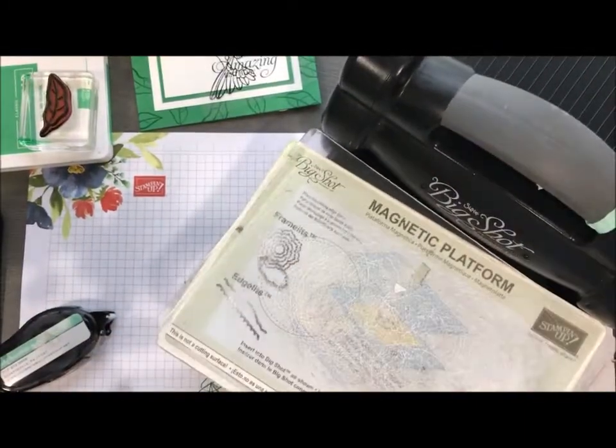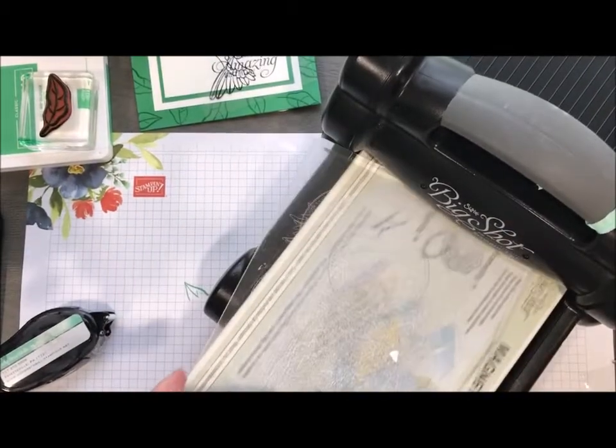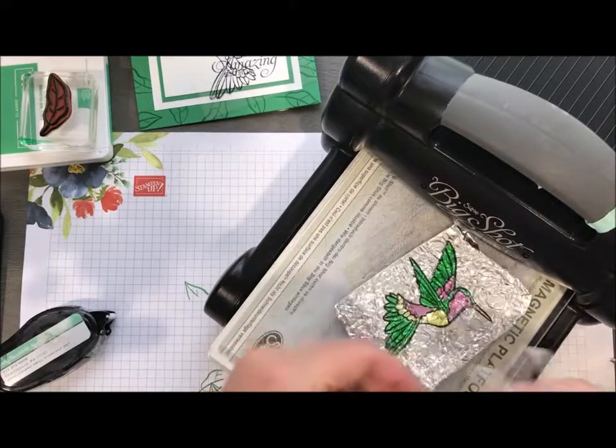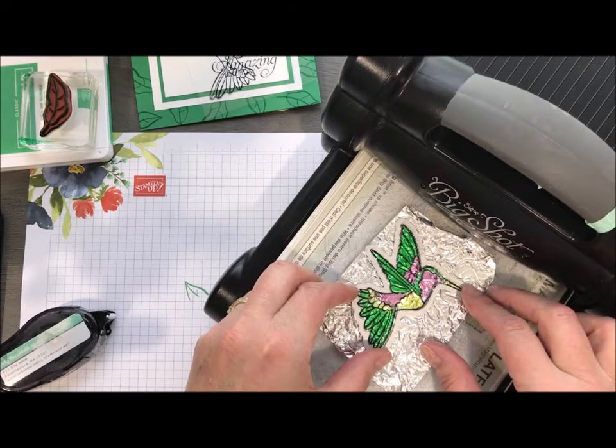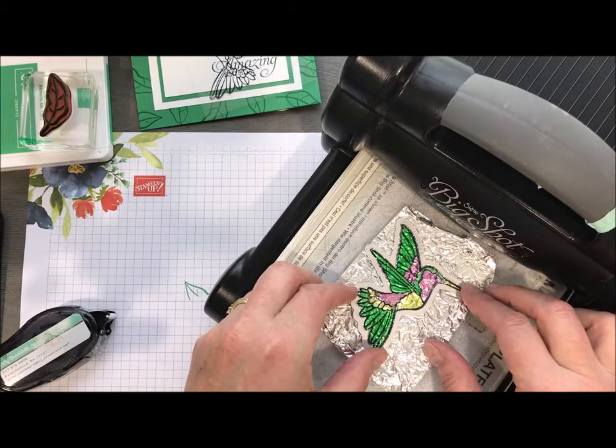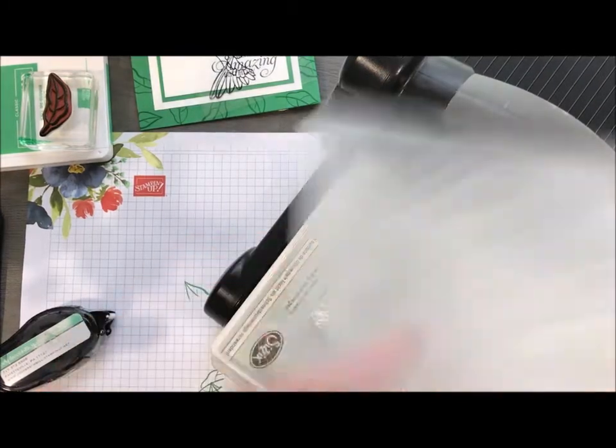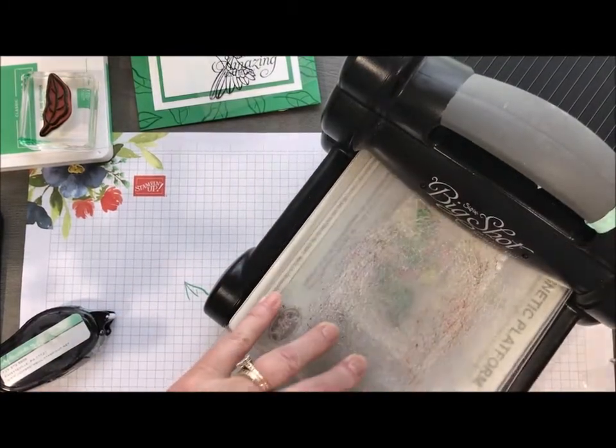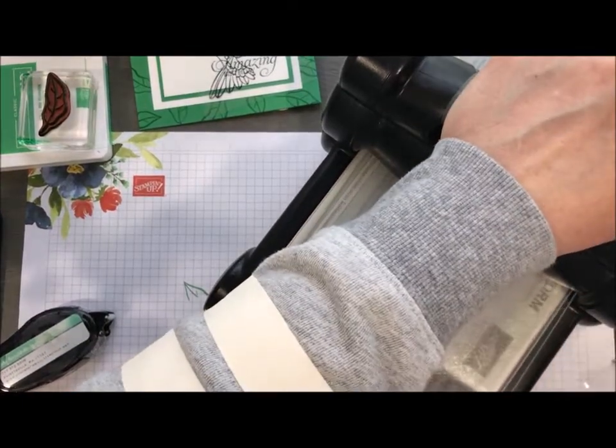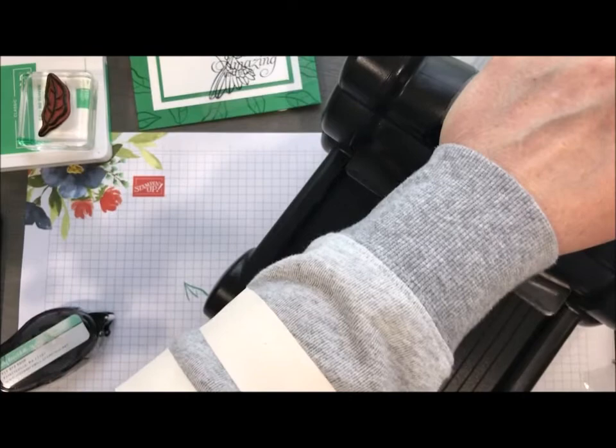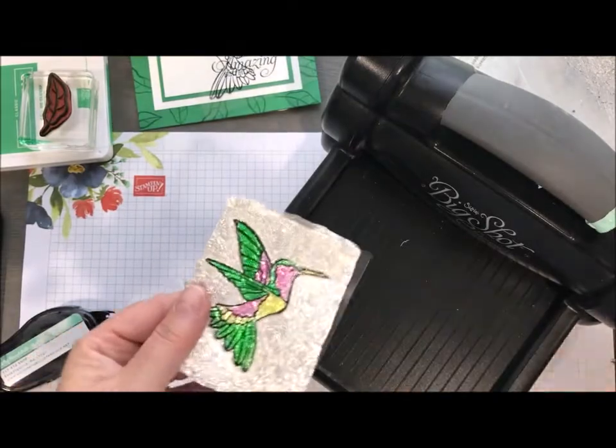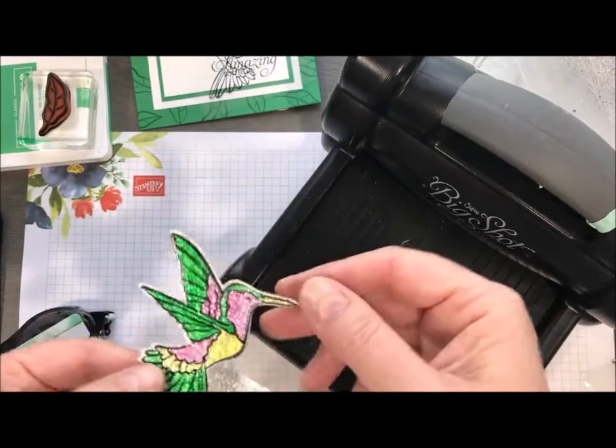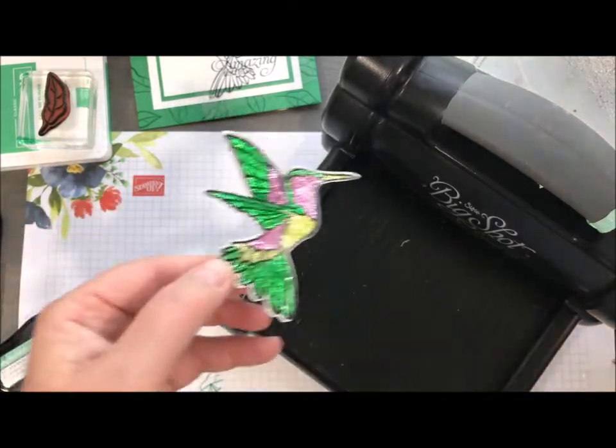I don't normally do Big Shotting on camera, but I am today. All right, little Hummingbird, you lay flat. I'm just going to lay my die right on top. You stay still, okay? Hang on. You might go for a ride here. It sounds worse than it is. Something about that aluminum foil just kind of makes it sound like it's breaking your machine. But there you go. There is that gorgeous Hummingbird stained glass technique.